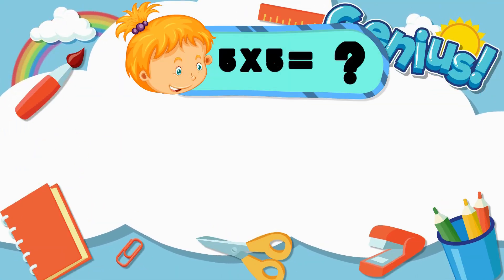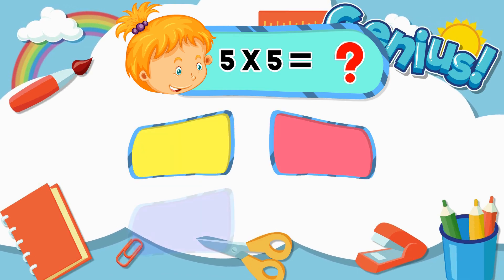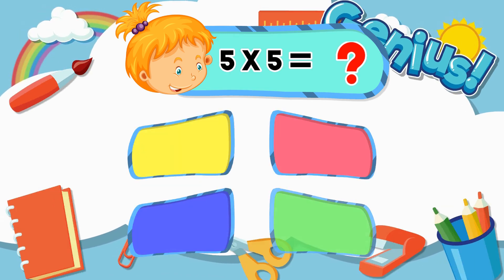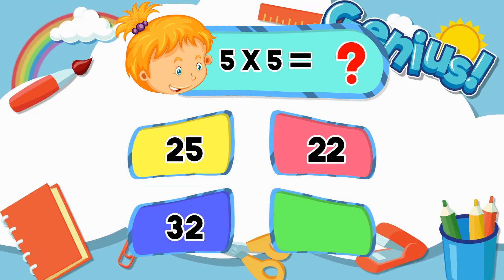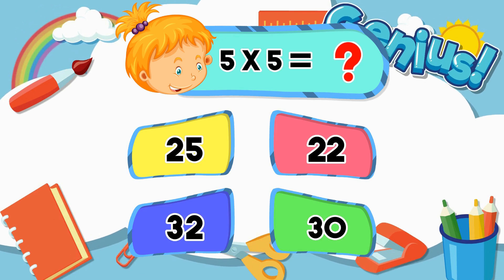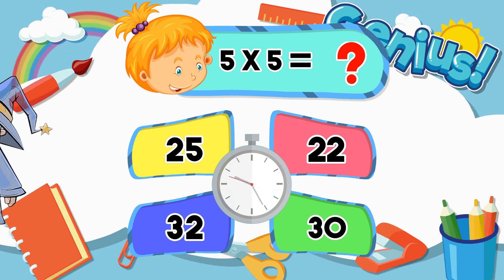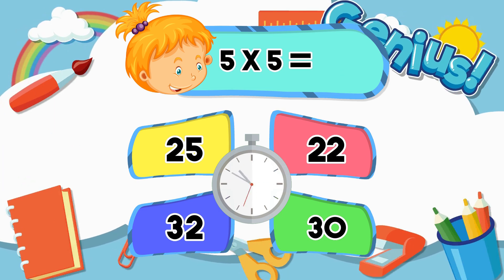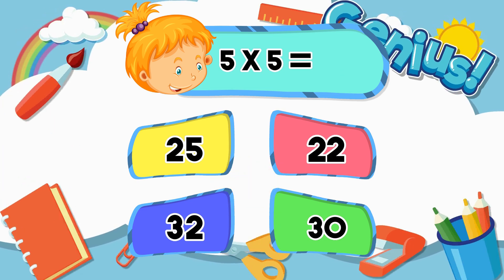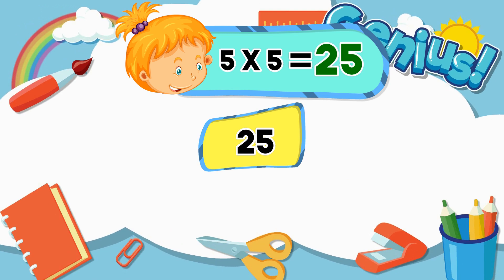What is 5 times 5? 5, 20, 22, 32, 30. The answer is 25.